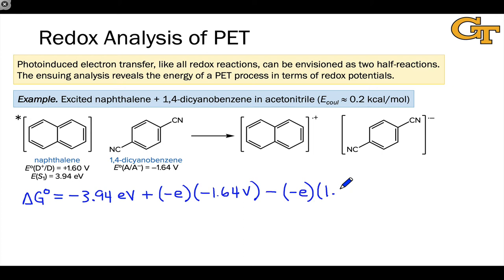To continue the calculation, I'm actually going to calculate the second two terms first since they represent the energy change associated with ground state electron transfer from naphthalene to 1,4-dicyanobenzene. In other words, if there were no photoexcitation involved here, what would the energy change be? We can get that by just calculating these two terms first.